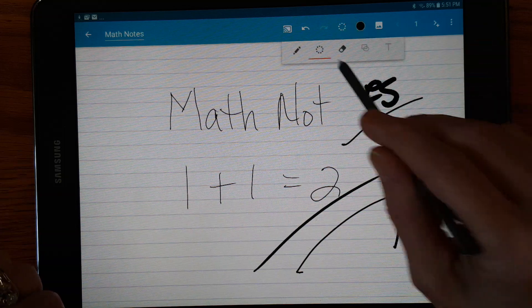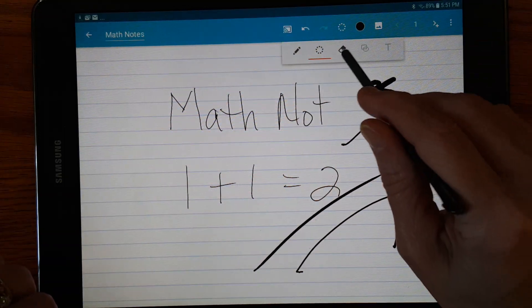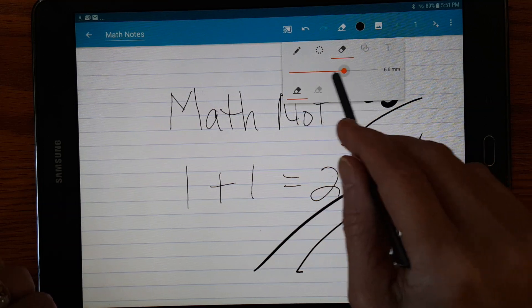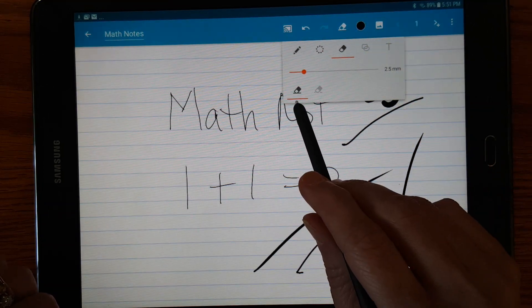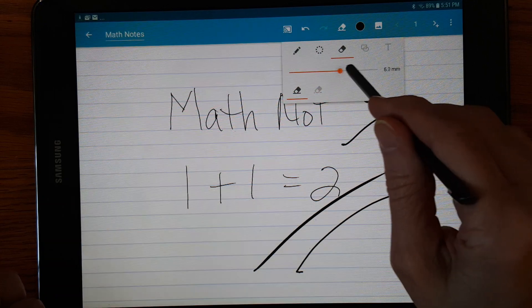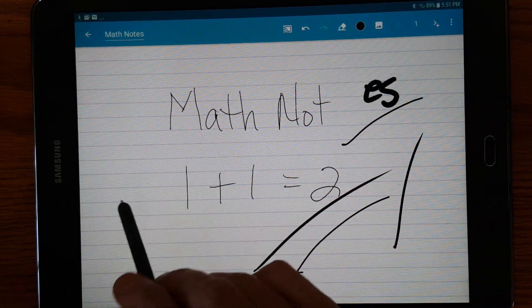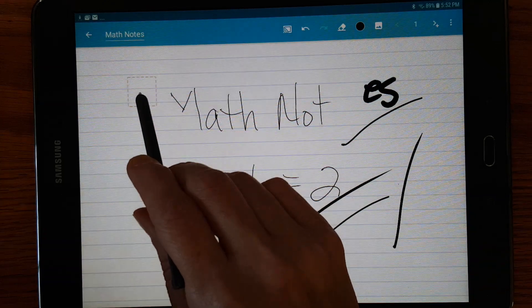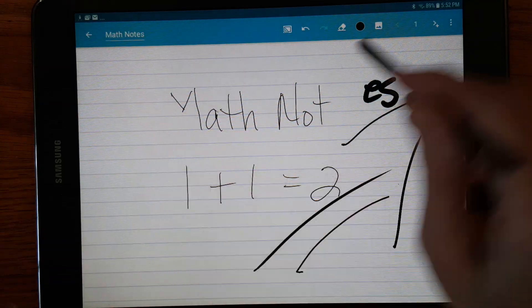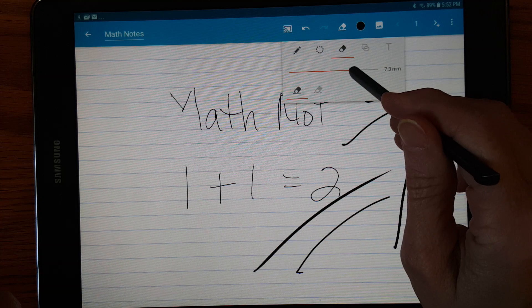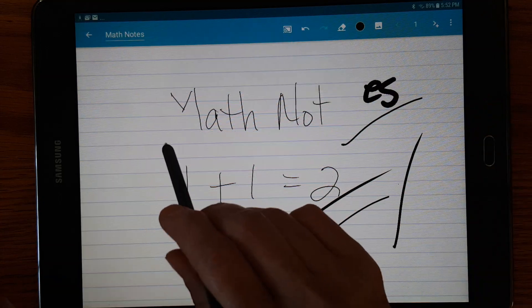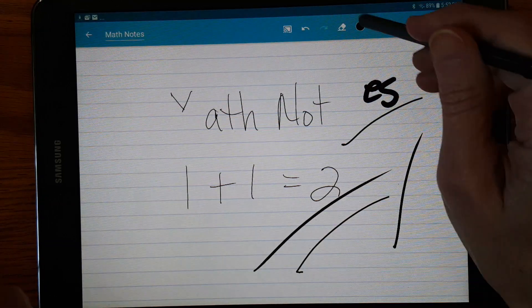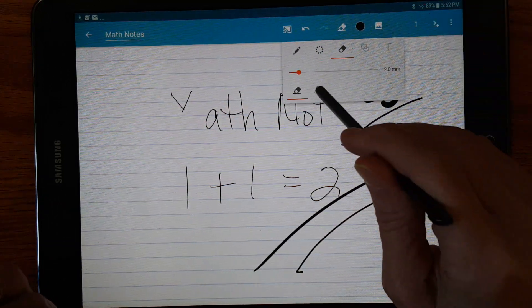I'm going to go back to pen. And there's also eraser. You can choose the size of your eraser. Let's see how well that works. On S-Note we had some issues with choosing the size of your eraser. So there's a big blocky eraser. I'm going to make it smaller. Oh, it does, hold on. It's erasing the entire line like it did on S-Note.